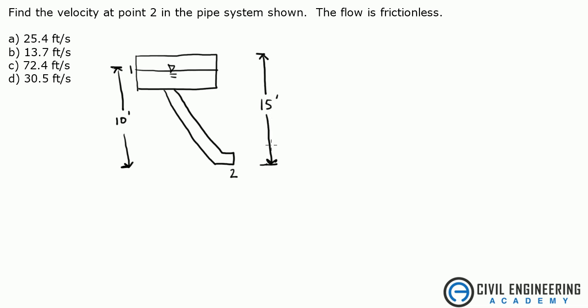We have 15 feet from the base of this all the way to the top of this tank and we have another dimension of 10 feet from where the water is down to that same point. This is point 1 and this is point 2. It also states that the flow is frictionless.